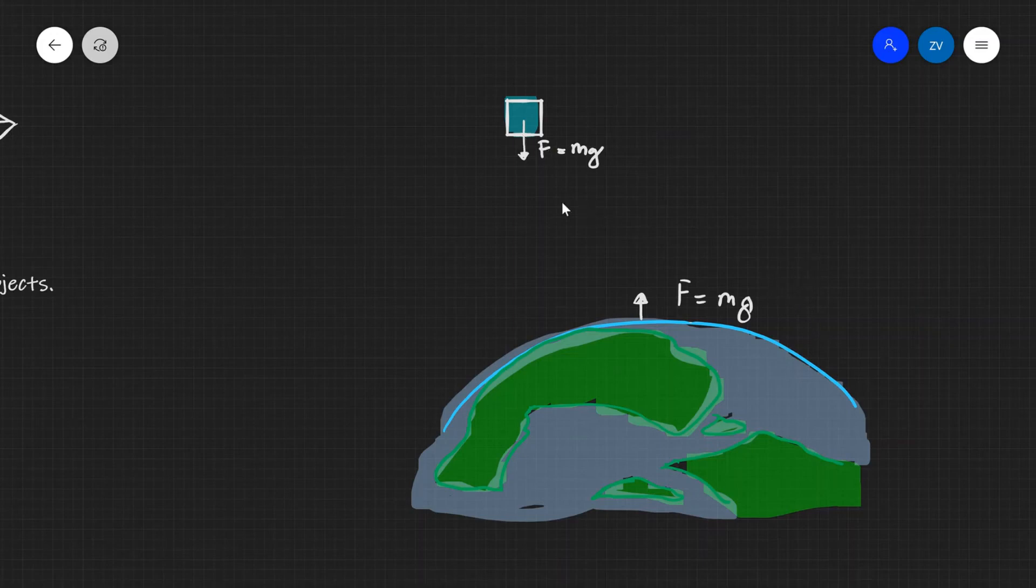So whenever the earth exerts a force onto this object, whatever that could be—it could be a satellite, it could be just a pen that is in the air about to fall down—the earth also is experiencing a force in the opposite direction. The only difference is because the mass of the earth is incredibly large.